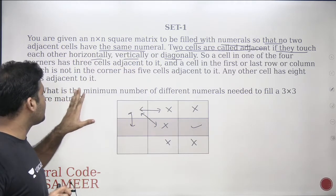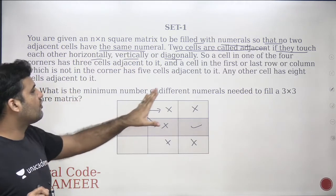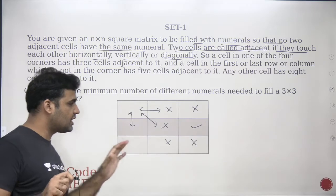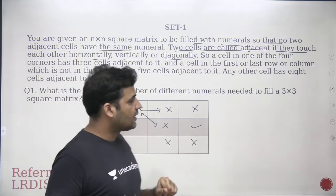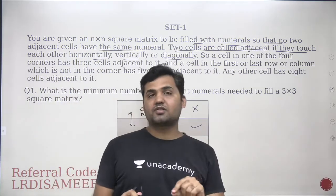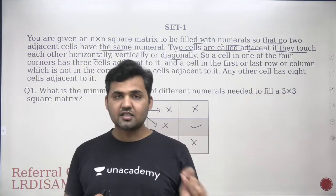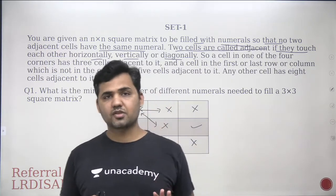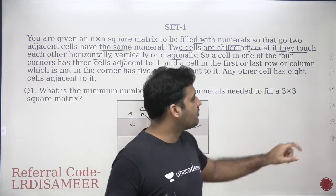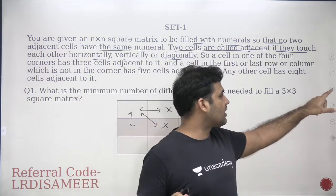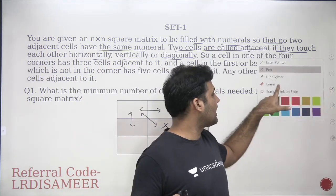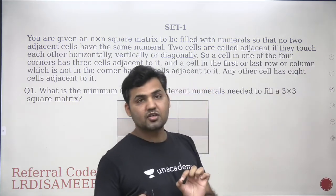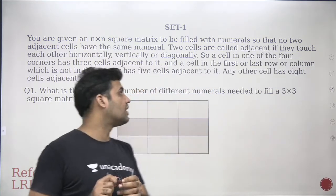Now the question is: what is the minimum number of different numerals needed to fill a 3 into 3 square matrix? If you don't try to make yourself understand what exactly is the meaning of the word adjacent, there is no point in solving the questions. Whenever you're solving the LR set, it's very important that you pay attention to these types of words.